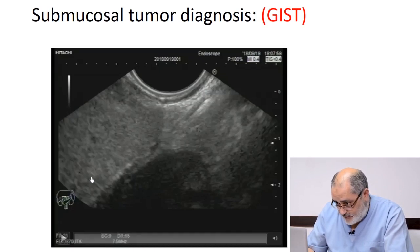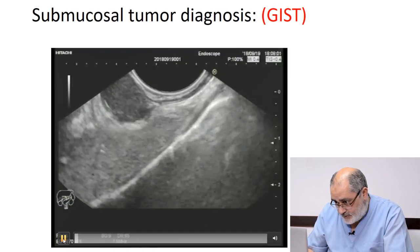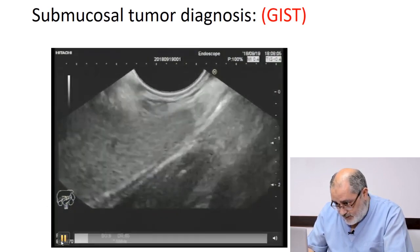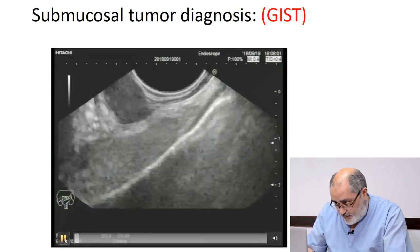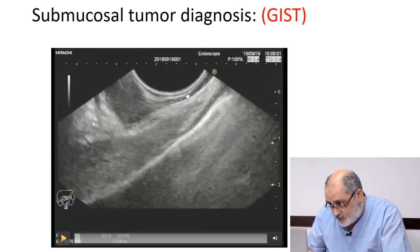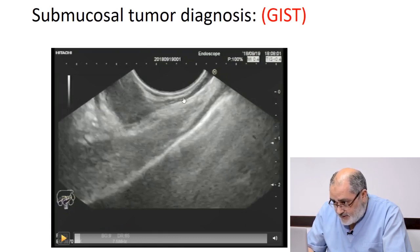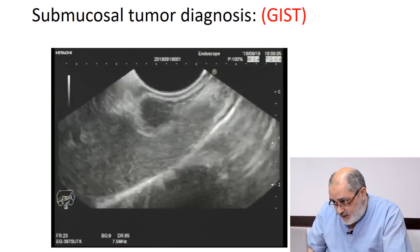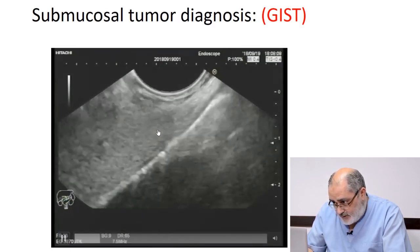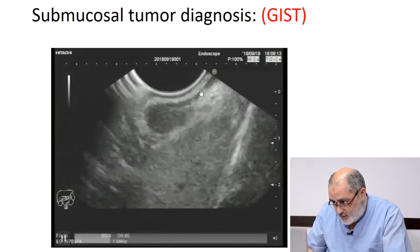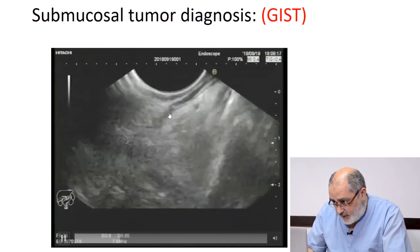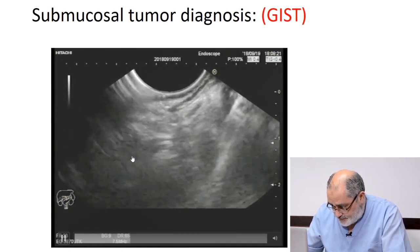This is another example of a small GIST from the stomach. Very nicely seen, it is originating from the fourth layer. Counting the layers again: hyperechoic mucosa, hypoechoic muscularis mucosa, hyperechoic submucosa, and hypoechoic muscularis propria layer. It is clearly seen that this tumor originates from the fourth muscularis propria layer. The most probable diagnosis is GIST. This is the liver — the tumor is indenting the liver but is not originating from the liver; it originates from the muscularis propria layer of the stomach wall.